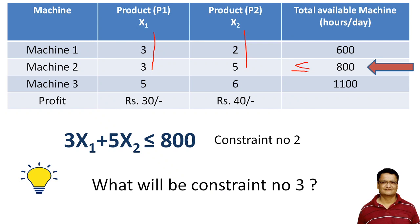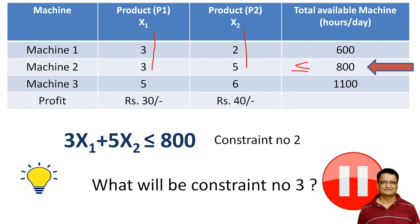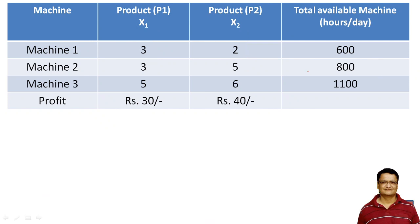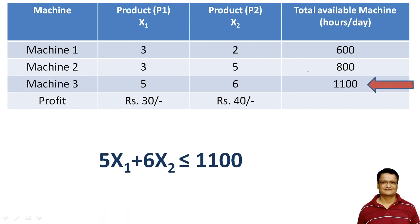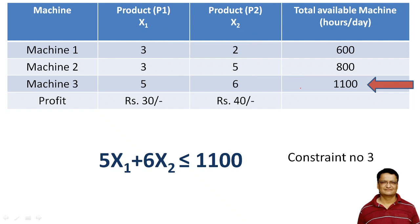Here is a question: what will be the third constraint? Pause the video and think about it. The third constraint would be: 5x1 + 6x2 ≤ 1100. This becomes constraint number 3, related to machine 3.